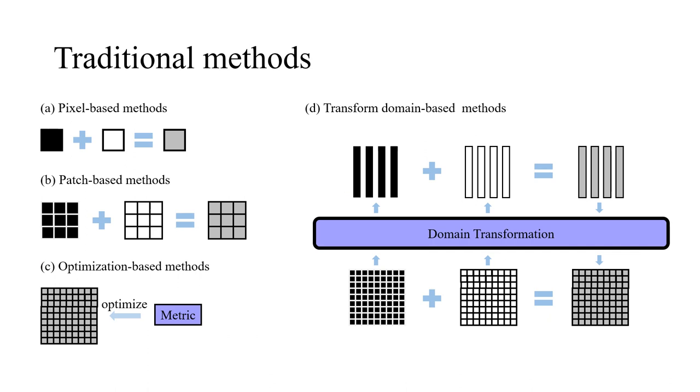Pixel-based methods work on the pixel level, calculating the weighted sum of source images to derive a fused image. Different from pixel-based methods, patch-based methods work on the patch level.